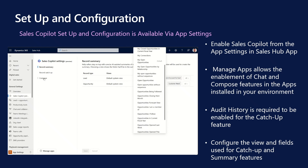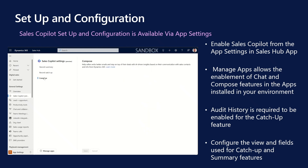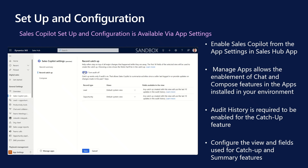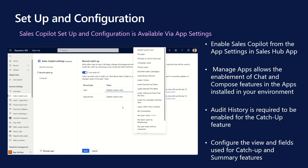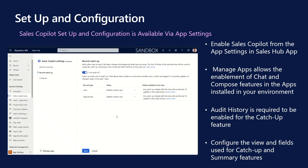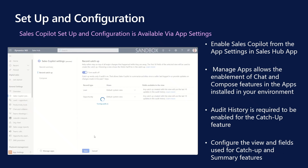You can configure different views for summary and catch-up. Catch-up information in Sales Copilot is generated from the audit history. Hence, users need to have access to the audit history and audit summaries to be able to view leads and opportunity catch-ups. One thing to note: if you update or remove fields in any of the selected views, open the Sales Copilot settings page, select the different view, save the changes, and then select the updated view. Ensure you have updated the fields listed under the fields column.